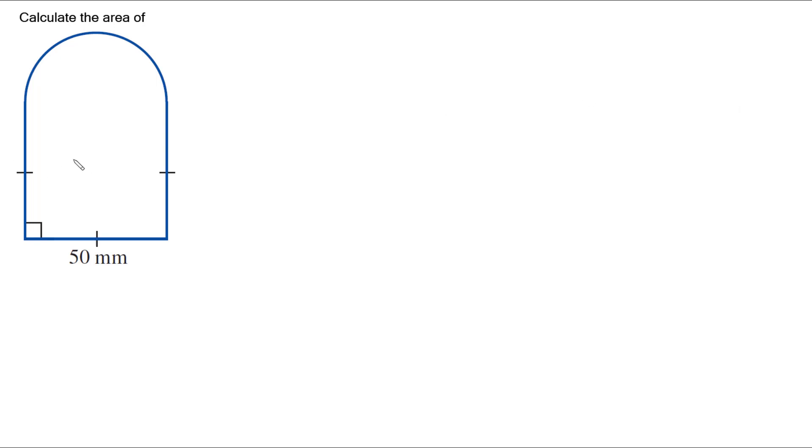Hi, in this video I'm looking at calculating the area of this shape here. Now this shape here has this side here which is 50mm. These two sides up until they start curving are marked with these tick marks on them, meaning that they are also 50mm.